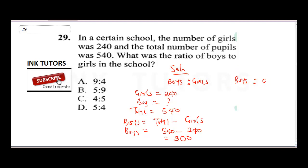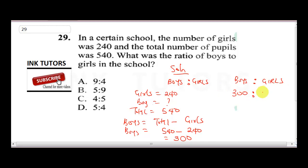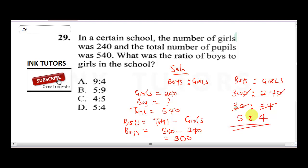Now that means boys to girls is 300 to 240. Reducing this — cancel out the zeros — this gives us 30 to 24. Then divide both by 6: 30 divided by 6 is 5, and 24 divided by 6 is 4. So the ratio of boys to girls is 5:4. Option D is the correct answer.